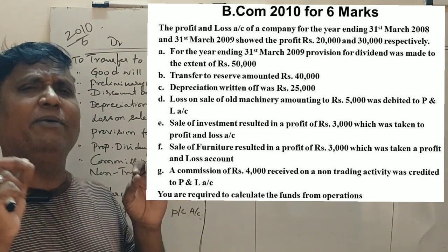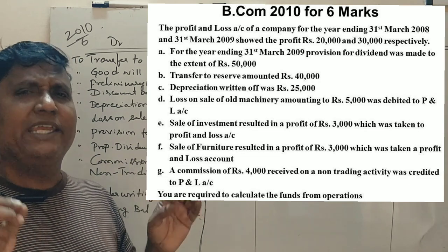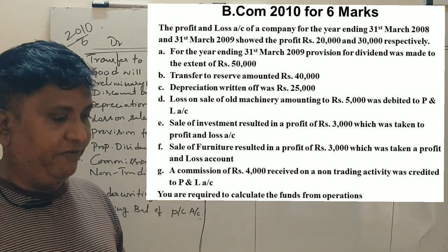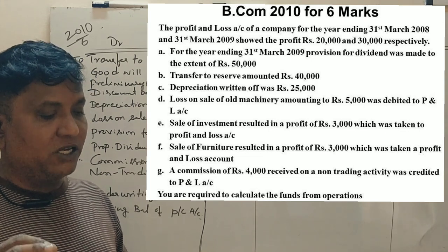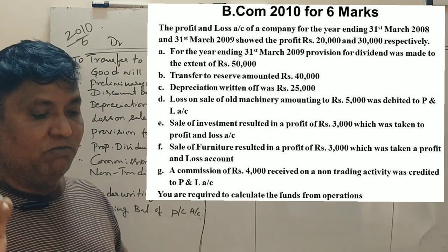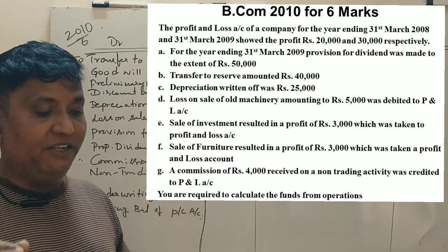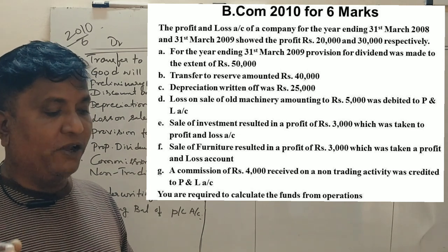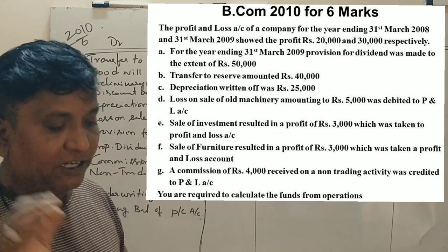If this is difficult for us, we will work through the question clearly. First question: the profit and loss account of a company for the year ending 31st March 2008 and 31st March 2009 showed a profit of 20,000 and 30,000 respectively.